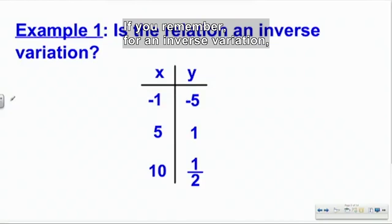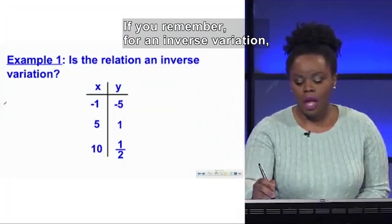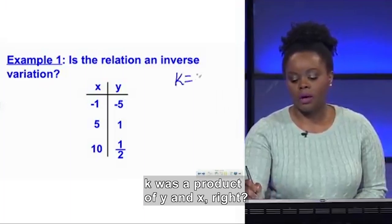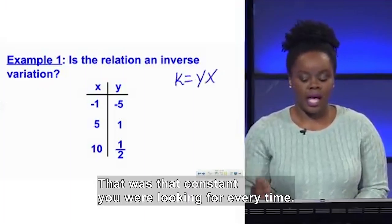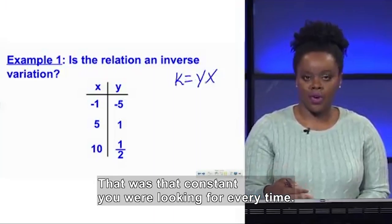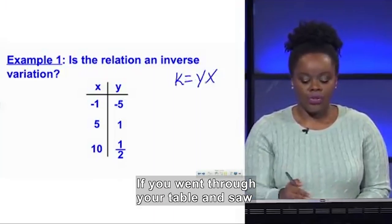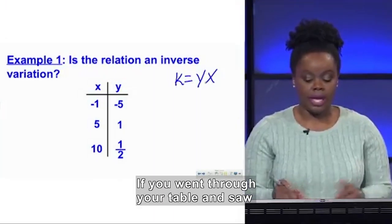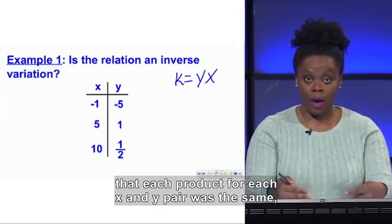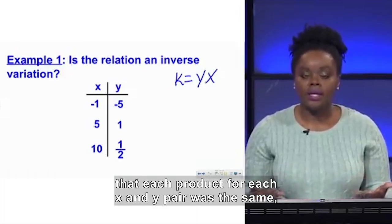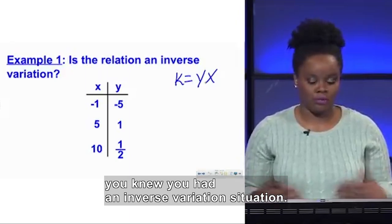So if you remember, for an inverse variation, k was a product of y and x, right? That was that constant you were looking for every time. So if you went through your table and you were able to see that each product for each x and y pair was the same, then you knew you had an inverse variation situation.